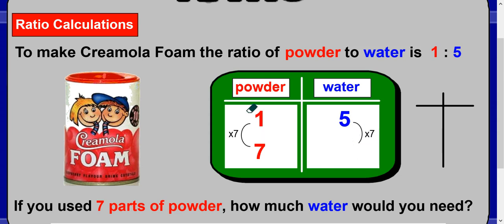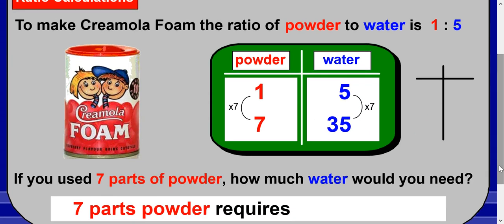Seven lots of powder means seven lots of water, which gives you 35. So the answer is: 7 parts powder requires 35 parts water.